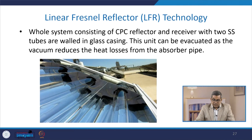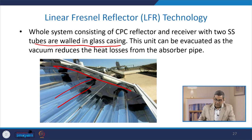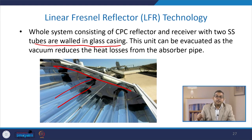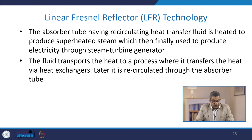The LFR technology whole system consists of a CPC reflector and receiver with two stainless steel tubes. They are enclosed in a glass casing — you can see here the tube and the glass casing. This unit can be evacuated, as the vacuum reduces the heat loss from the absorber pipe. These are the absorber pipes, and if you put a vacuum, then definitely the heat loss can be minimized.